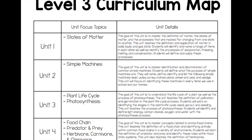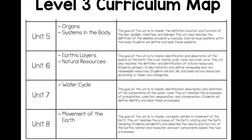Unit 1 is states of matter — looking at the definition of matter as well as the process of changing between states of matter. Unit 2 is simple machines. Unit 3 is the plant life cycle and photosynthesis. Unit 4 is food chain, predator and prey, and then herbivore, carnivore, and omnivore. Unit 5 looks at organs and systems in the body — the skeletal system, the circulatory system, the muscular system, and the nervous system. Unit 6 looks at the earth's layers as well as natural resources. Unit 7 looks at the water cycle, and Unit 8 looks at movement of the earth.